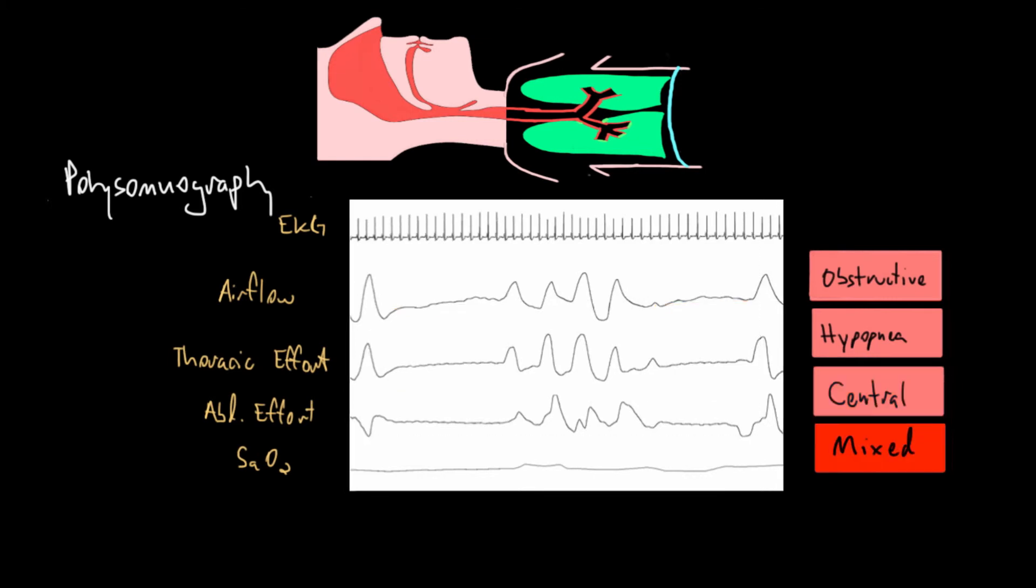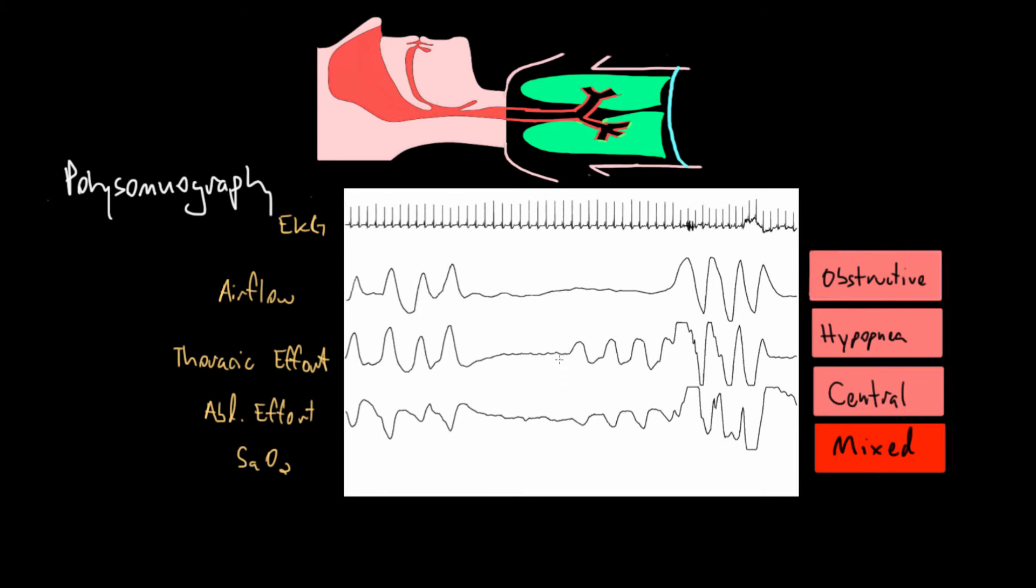The last event we'll talk about here is a mixed apnea. A mixed apnea has a central component and an obstructive component. We know it's a complete apnea because if we look at the airflow between here and here, we see that it's completely flat. There's no airflow in or out. If we look at the thoracic and abdominal effort curves, we'll be able to tell the central from the obstructive component. In the first half of this event, between about here and here, we see that our effort is relatively flat in the thoracic and abdominal effort compartments. This would be characteristic of a central apnea where we have no effort and no flow.